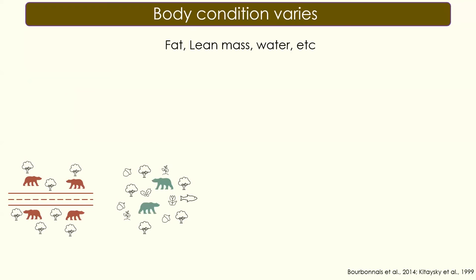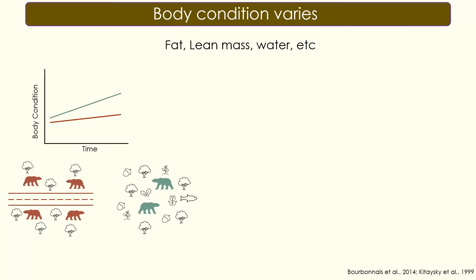Looking at two studies: researchers examined the body condition of two populations of grizzly bears in British Columbia. One population in more rural areas with higher road network complexity had more homogenous, lower-quality resources. Another population was in more fragmented areas with higher heterogeneity and more resources, considered higher-quality habitat. Following body condition in terms of weight, water, lean mass, and fat across the summer, they found that although body condition increased in both groups, those in lower-quality habitats had significantly lower body condition.